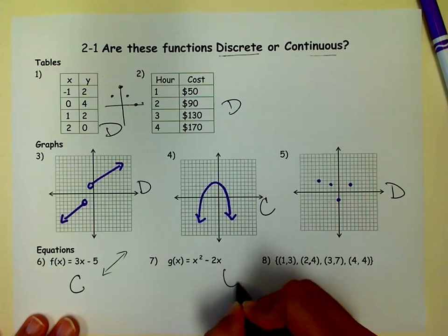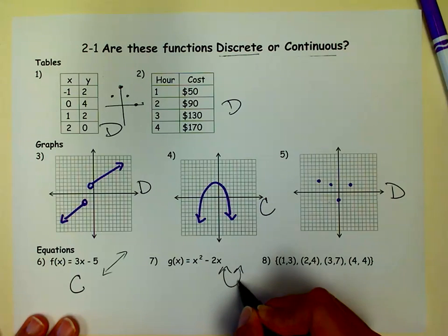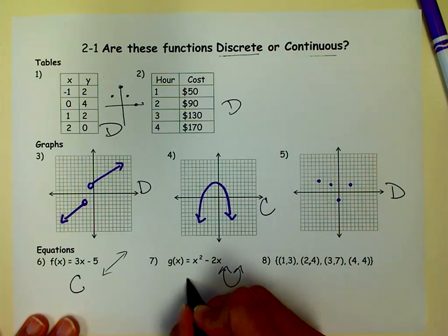This is a parabola. So to get from anywhere on one part to the next, it's continuous.